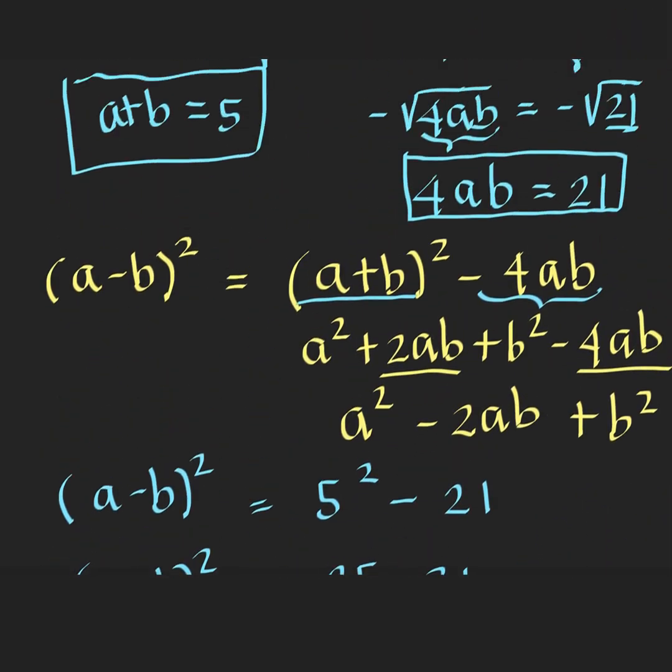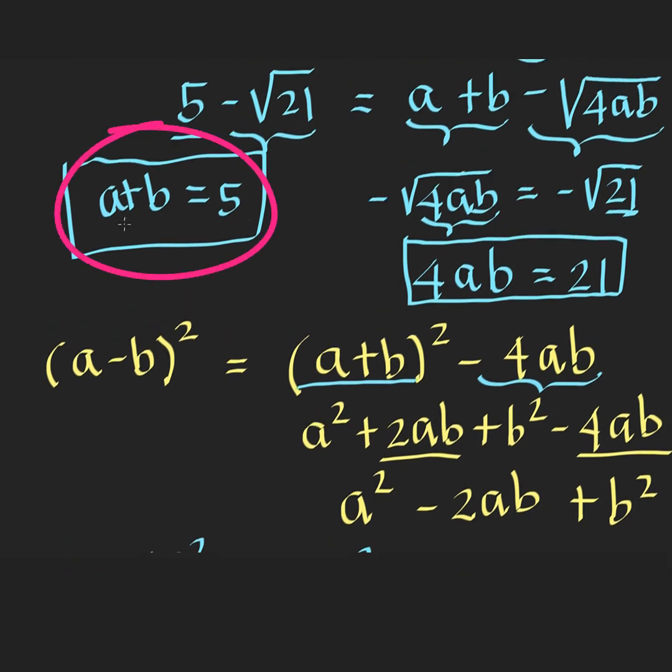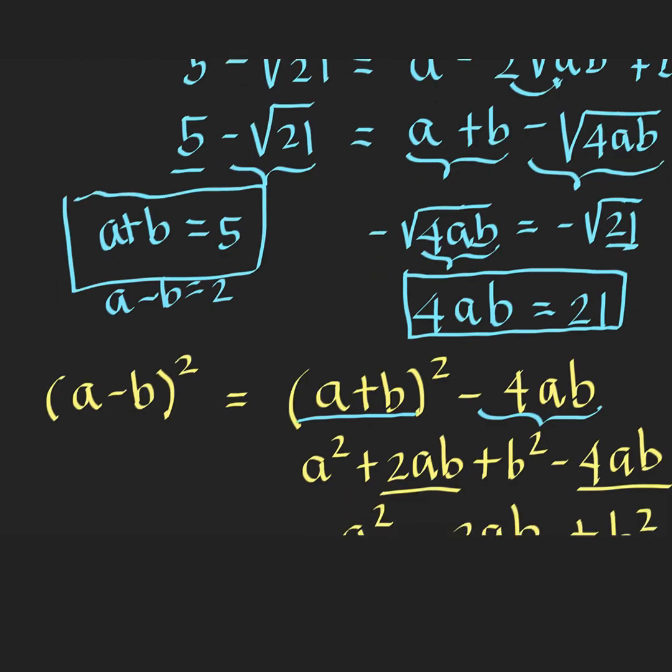So we take A minus B must be positive 2. And previously, we said that A plus B is equal to 5. So we have A plus B equals 5, and we also computed that A minus B is equal to 2. So solving these two equations simultaneously now, let's do that at the bottom.